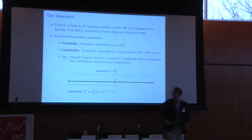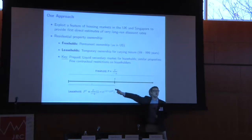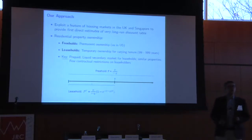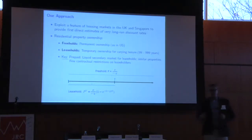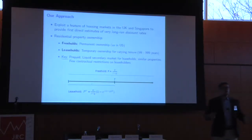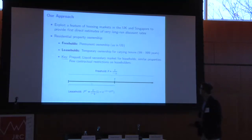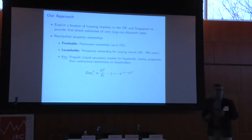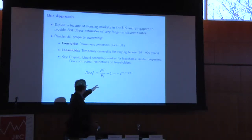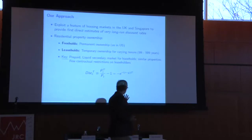The leasehold is slightly different — it equals the freehold price minus the present value of owning the property at time T. So the price difference between a freehold and a leasehold gives us the present value of owning the leasehold in 200 years. In other words, it gives us the fraction of the freehold's value today that comes from rents accruing after the duration of the lease. Very simply, the price discount for an otherwise similar property between a T-maturity leasehold and a freehold is given by this equation.